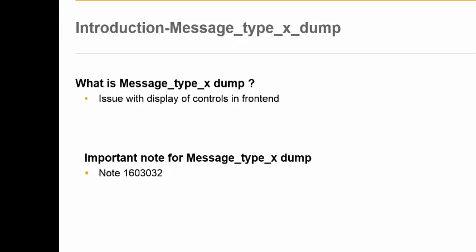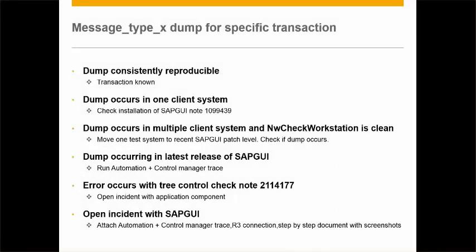The dump can occur for a specific transaction or it can be totally random. When the dump occurs for a specific transaction, check if the dump occurs from one client system or from multiple client systems. If the dump occurs only in one client system, it could be that there is a bad installation of SAP GUI in that one client system.